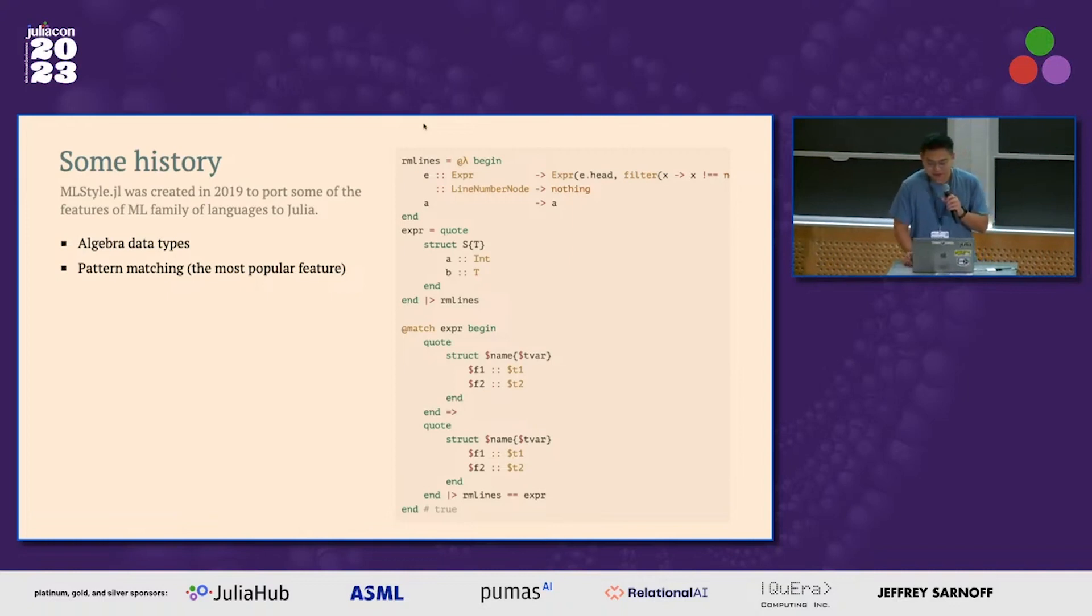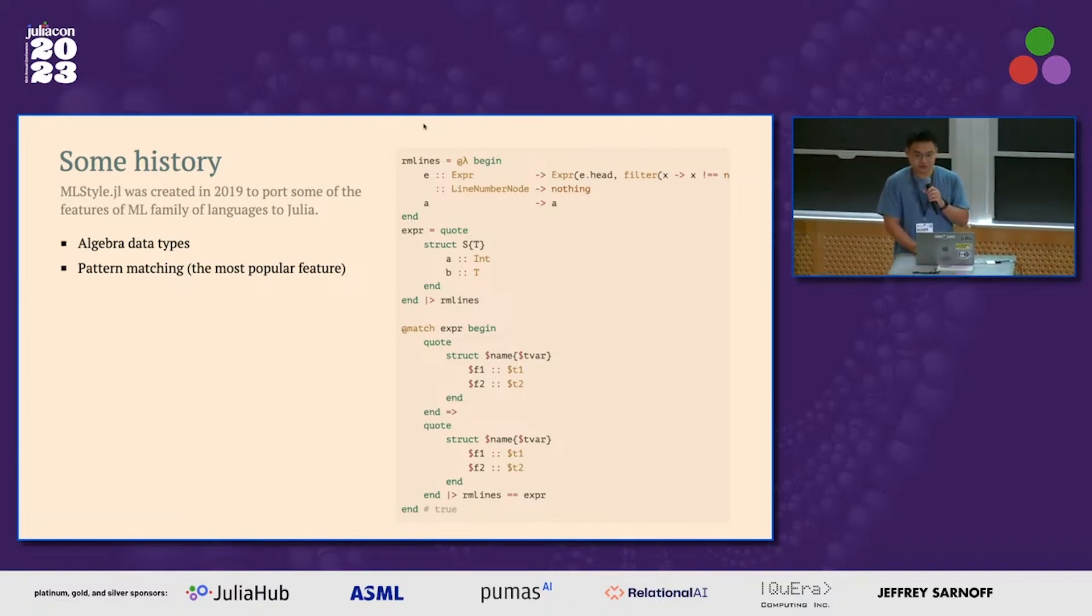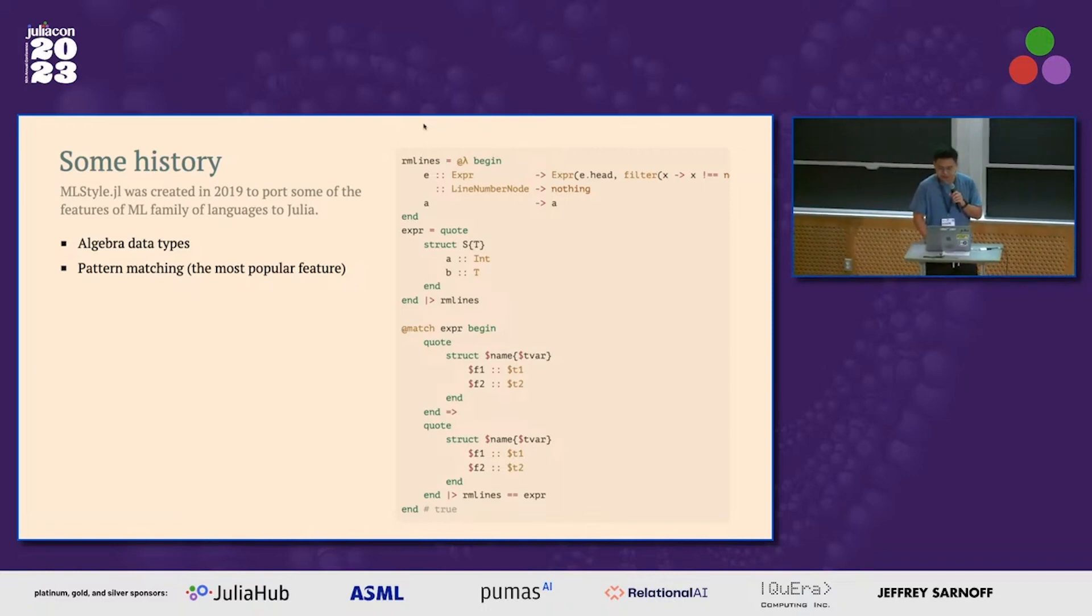So in parallel of working on quantum computing stuff, we worked on something about supporting the features of ML family of languages to Julia. So that mainly includes two things, algebra data type and pattern match. And pattern match seems to be the most popular feature. And this package was created by Tanner Zhao, who is a close friend of mine.